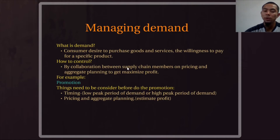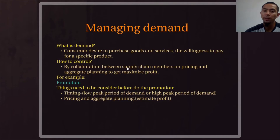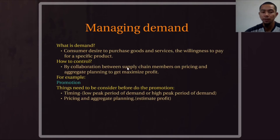Timing is when we will do the promotion — either in a low peak period or high peak period of demand. Supply chain members must collaborate and forecast which timing gives more profit to the company. Pricing refers to setting a reasonable product price that customers are willing to pay. Aggregate planning means future production planning that includes all costs and estimates of revenue, from which we can determine profit.